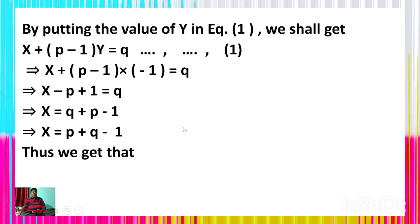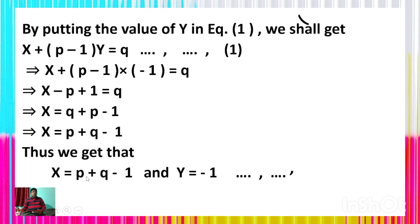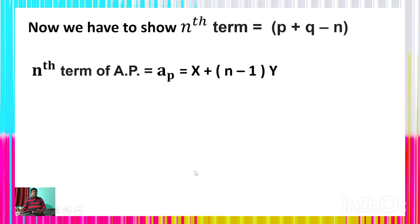Thus we get x = p + q − 1 as the first term and common difference y = −1. Now we have to show the nth term of the AP: a_n = x + (n−1)y = p + q − n.